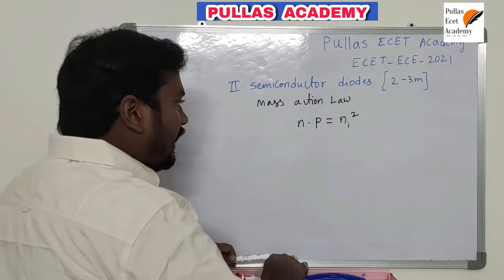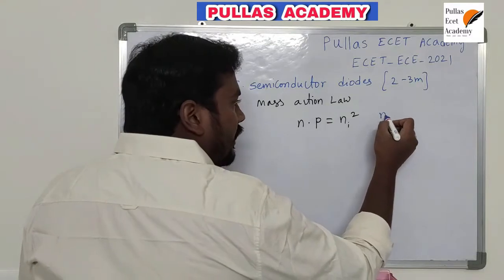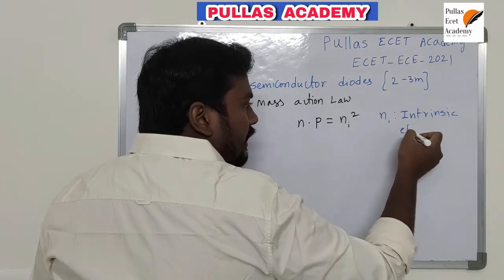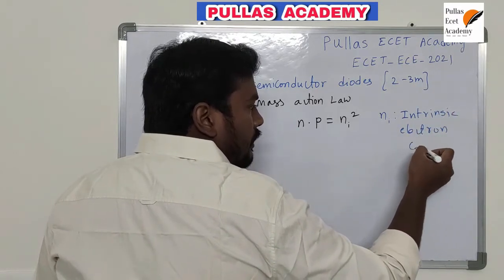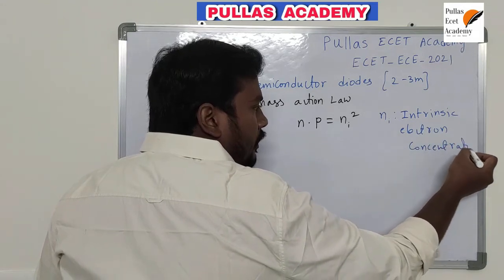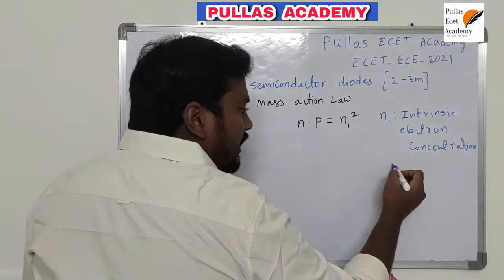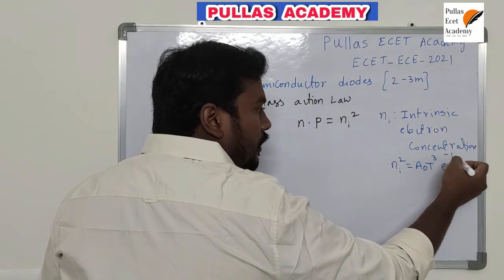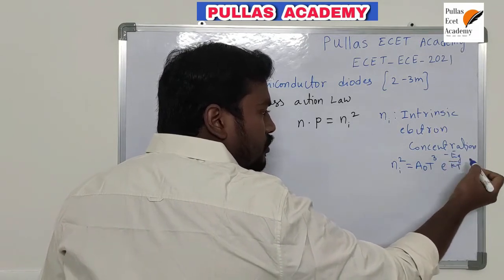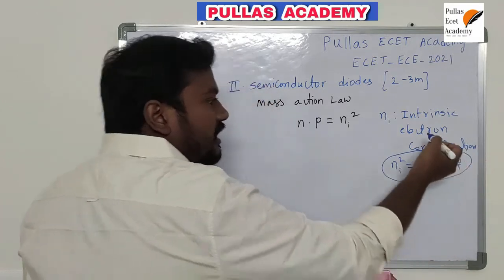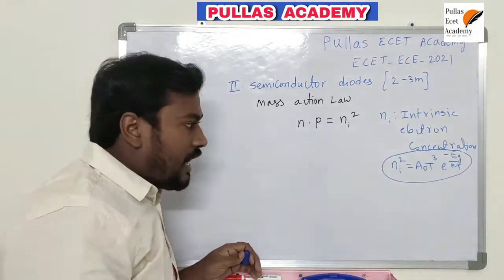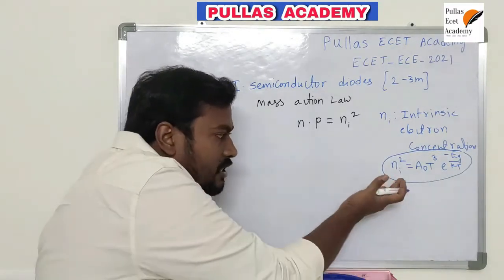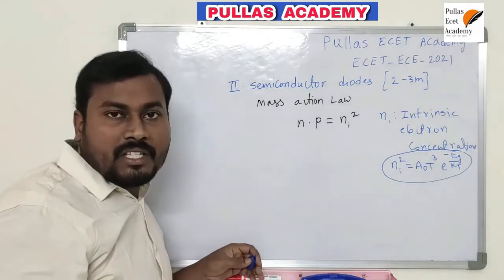Where Ni is the intrinsic electron concentration. Ni squared is equal to A-naught multiplied by T cubed, times e to the power of minus Eg by KT. This is how Ni is defined in intrinsic semiconductors. Ni squared is proportional to T cubed, so Ni increases with respect to temperature.